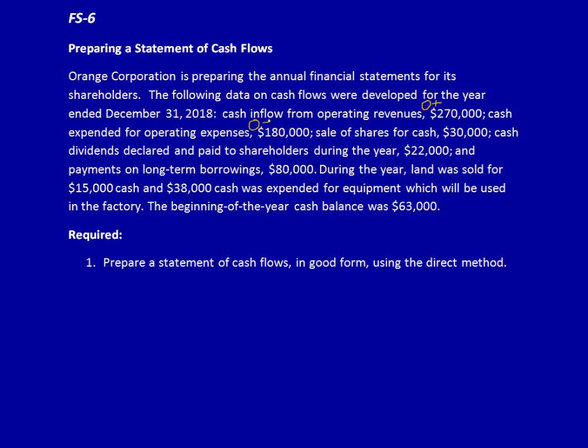Sale of shares for cash, $30,000 — the sale of shares goes under financing activities and this is a sale, so we got cash inflow. Cash dividends declared and paid — the word paid is very important, it means an outflow of cash, and dividends are part of financing activities. Payments on long-term borrowing — that's an outflow and borrowing means financing activities.